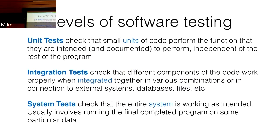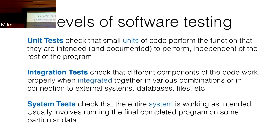Unit tests check just one item at a time — a small unit of code. Make sure it actually does the functionality you want, that it works as documented, and it's independent of everything else. You're not testing how it relates to other parts of your code — just: does it do what it's supposed to do?